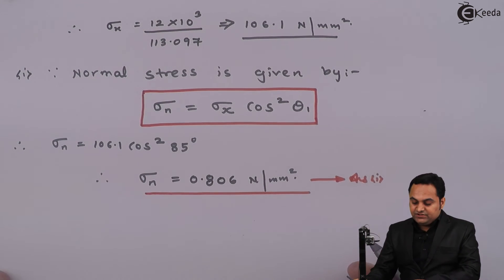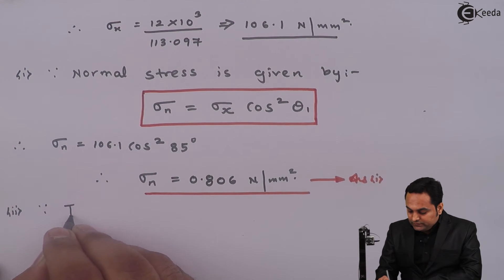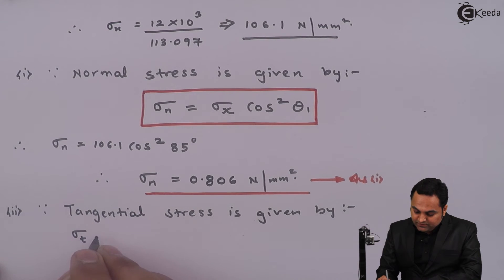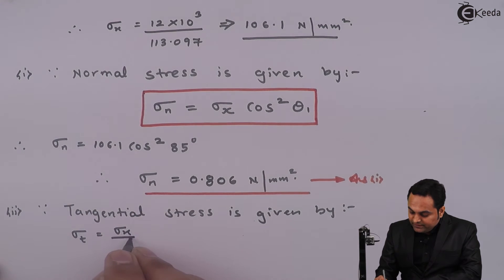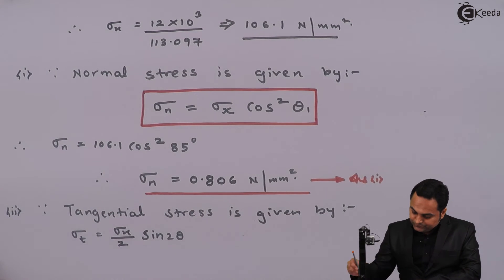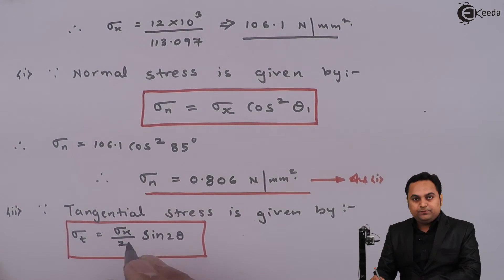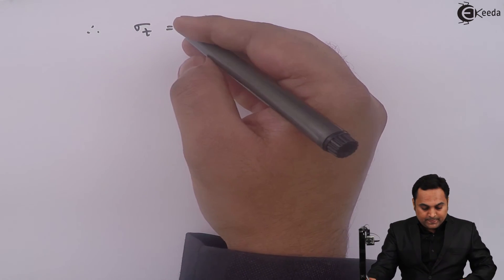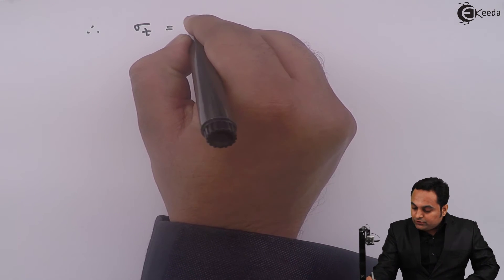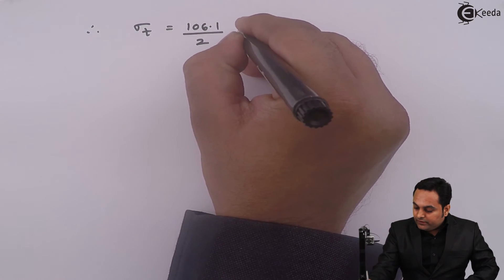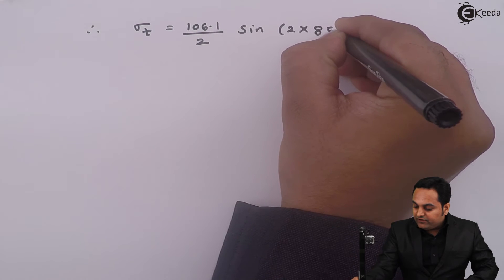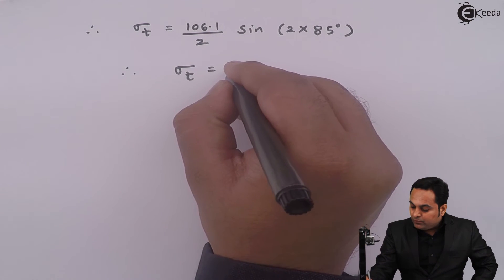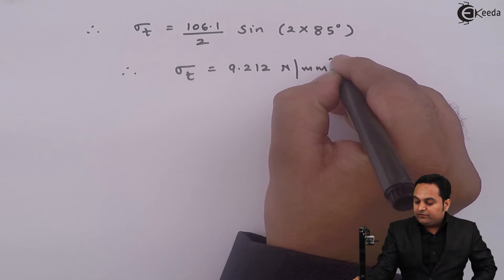Next we find the tangential stress. The formula for tangential stress is sigma t = (sigma x / 2) × sin(2θ₁). Therefore sigma t = 106.1 / 2 × sin(2 × 85°) = 9.212 Newton per mm². This is the second answer.